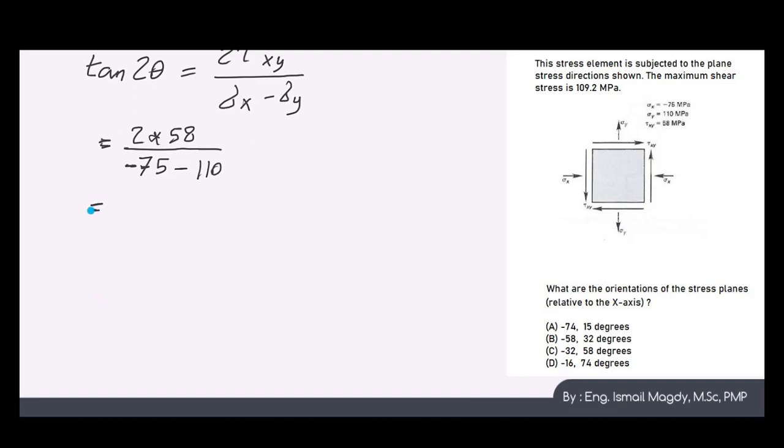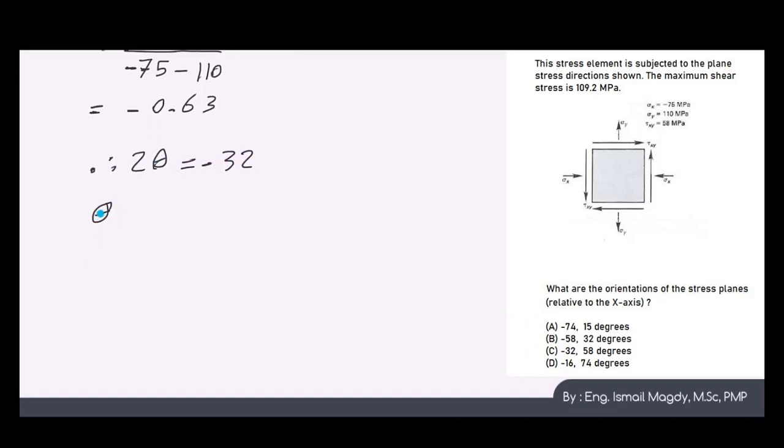Which means minus 0.63. This is tan 2 theta. So solving this, we get that 2 theta equals minus 32, which means that theta equals minus 16. And of course, the other angle is the angle that completes the minus 16, which is 74 degrees. So this is the answer.